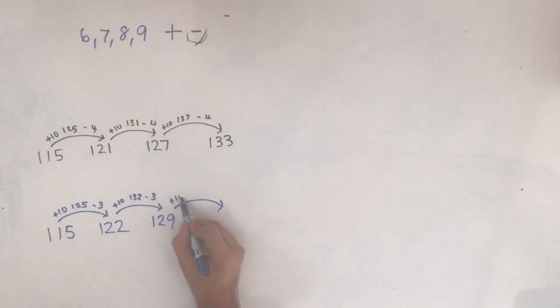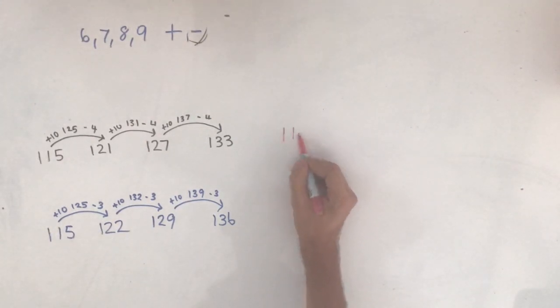129 add 10 is 139, minus 3 which takes you to 136. So again, you're just adding 10 and then taking a smaller amount away. To add 8, it's very similar, but instead of taking away 3, we're going to take away 2.